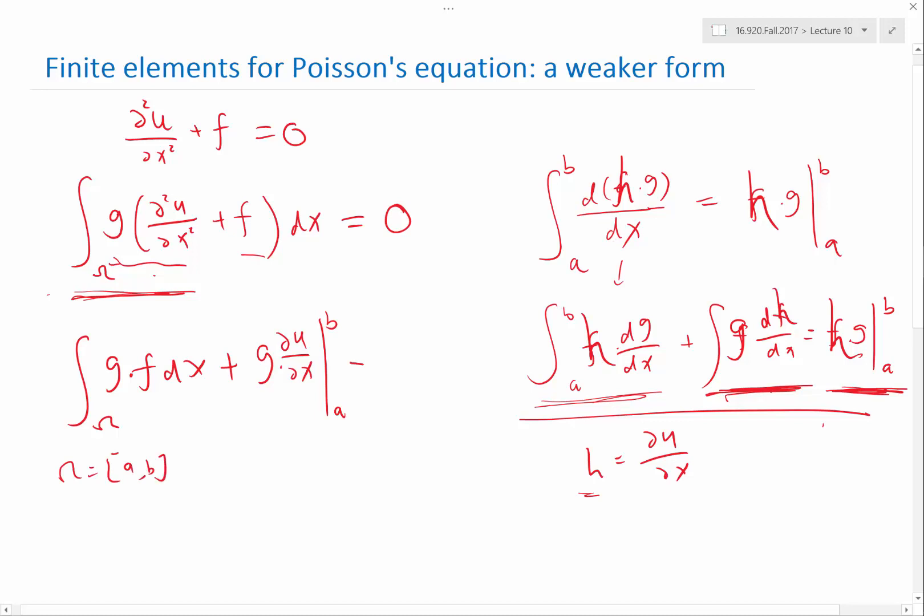let's say omega is equal to a and b, and minus another term that is integrative of omega, dg dx. So, that's dg dx times h, which is du dx. So, this is equal to zero.